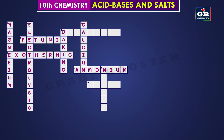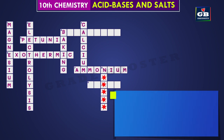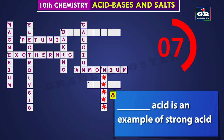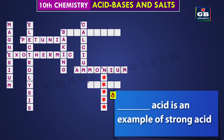Let's see the next one — eight down. Dash acid is an example of a strong acid. You got it? The answer is nitric. Nitric acid is an example of a strong acid.